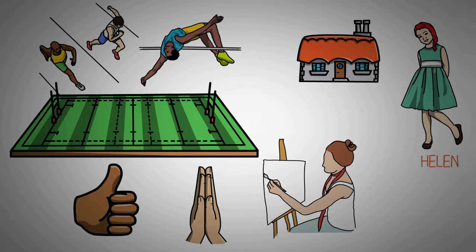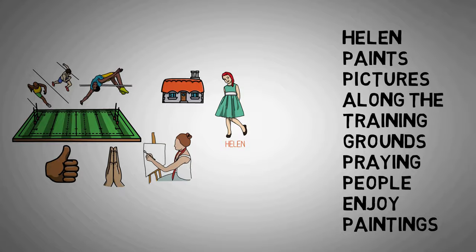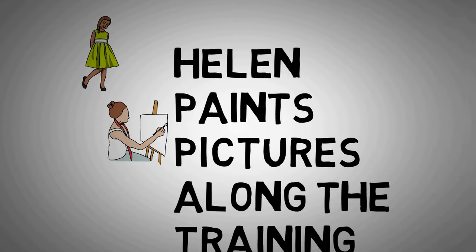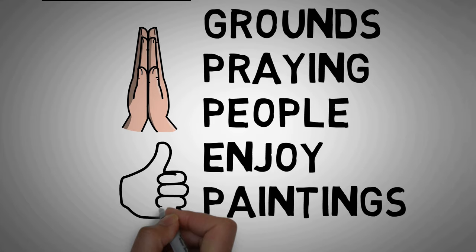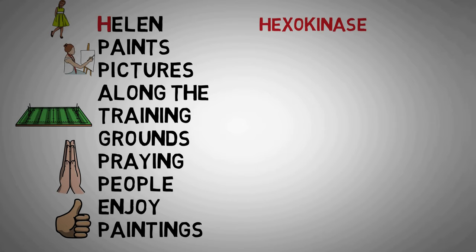And this brings us to our mnemonic that will help us to remember all the enzymes of glycolysis. Helen paints pictures along the training grounds, and she used to pray that people enjoyed her paintings.